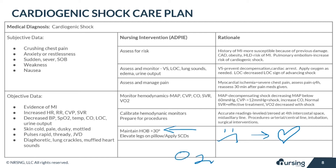Elevating the patient's legs and applying sequential compression devices (SCDs) helps decrease peripheral edema, facilitates venous return, and prevents DVTs. DVTs are the number one cause of pulmonary embolisms. Remember, SCDs are contraindicated in a patient with a current DVT.